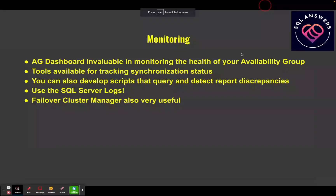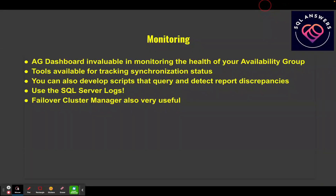A few points on monitoring: there is an AG dashboard integrated into SQL Server Management Studio, which is invaluable for monitoring the health of your availability group. You can look at each database with color-coded health — green is healthy, amber is a potential problem, and red means the database is not replicated. There are also tools available for tracking synchronization status, and you can develop your own scripts to query the DMVs and report discrepancies, set thresholds on lag and latency, and alert on those.